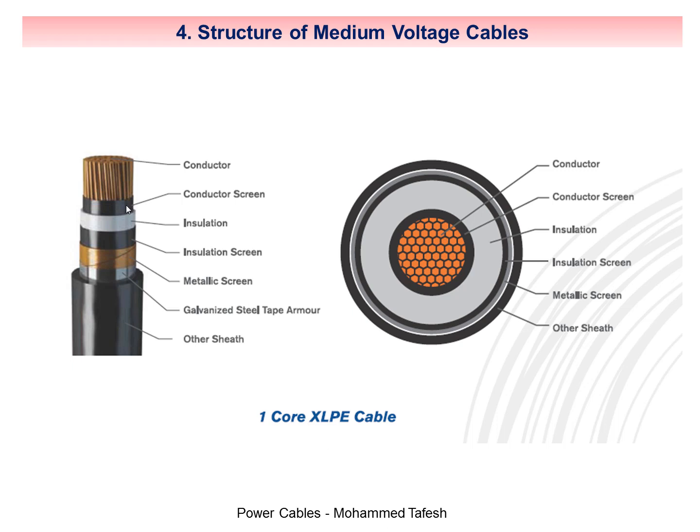The next layer is the inner semiconductive layer, which is called the conductor shield or conductor screen. This layer is made of a carbon mixture with polyethylene and is applied directly onto the surface of the uneven conductor, because unevenness in the conductor leads to irregularity of the electric field. This layer makes the effect of the electric field equal across all surfaces of the dielectric, which prolongs the life of the dielectric and prevents the occurrence of the water tree phenomenon.